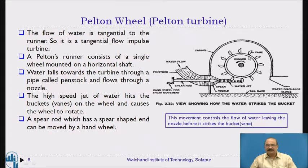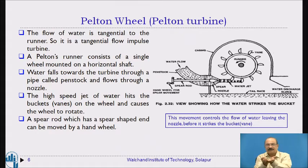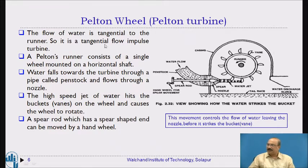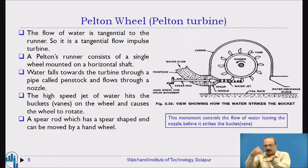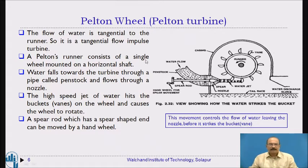The runner is fixed on this shaft and has blades. These blades are of a particular nature — they are joined at the center. Water strikes on this particular blade. Whatever water falls here then goes to the tailrace. The flow of water is tangential to the runner, so it is a tangential flow impulse turbine. The Pelton runner consists of a single wheel mounted on a horizontal shaft, with blades mounted over it.